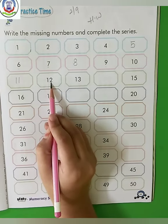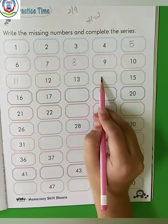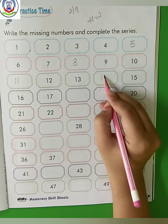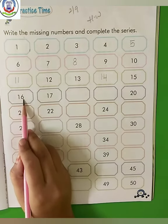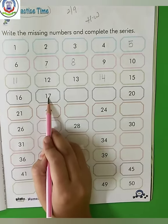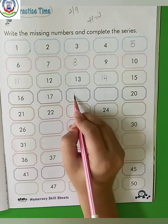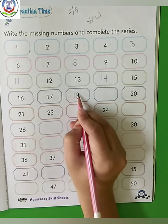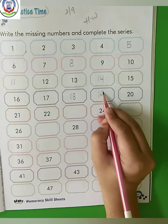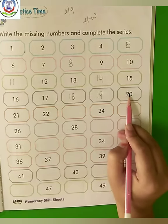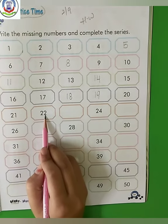10 plus 2, 12. 10 plus 3, 13. After 13, what will come? 10 plus 4, 14. 10 plus 5, 15. 10 plus 6, 16. 10 plus 7, 17. After 17? 10 plus 8, 18. After 18? 10 plus 9, 19. 10 plus 10, 20. 20 plus 1, 21. 20 plus 2, 22.